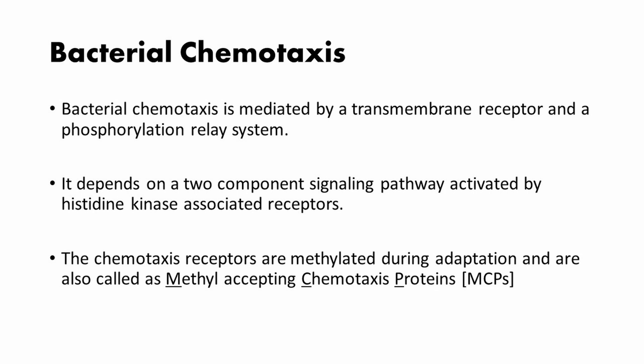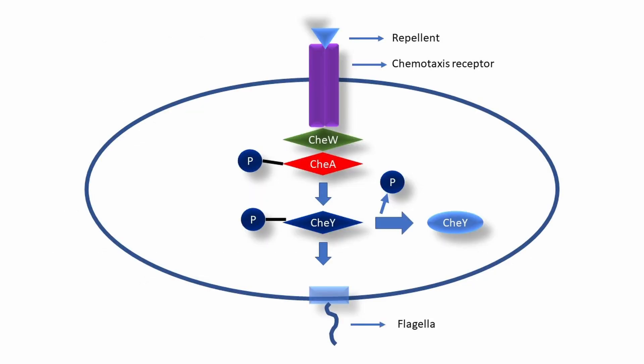Bacterial chemotaxis is mediated by transmembrane receptors and phosphorylation relay systems, and it depends on a two-component signaling pathway activated by histidine kinase-associated receptors. The chemotaxis receptors are methylated during adaptation and are therefore called methyl-accepting chemotaxis proteins, or MCPs. The phosphorylation relay system enables the chemotaxis receptors to control the flagellar motor.